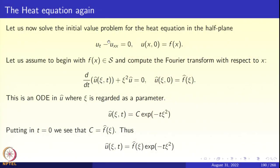Take the Fourier transform of the heat equation. The first term gives d/dt of û. In the second term, recall that the Fourier transform of minus d²/dx² is multiplication by χ². So when you Fourier transform the heat equation, you get d/dt of û(χ,t) plus χ² û equal to 0. That is an ordinary differential equation for û.